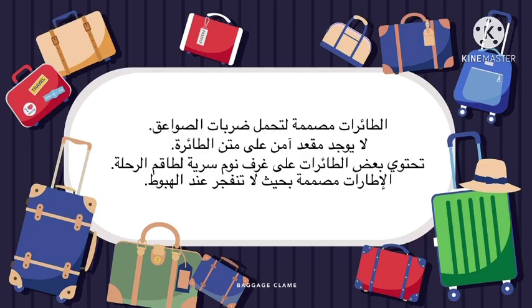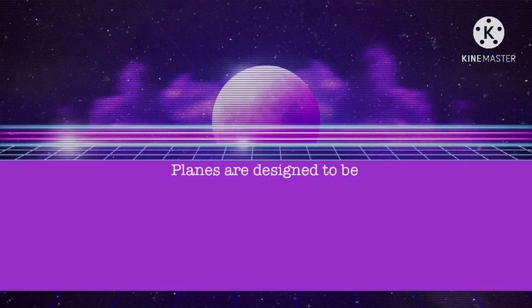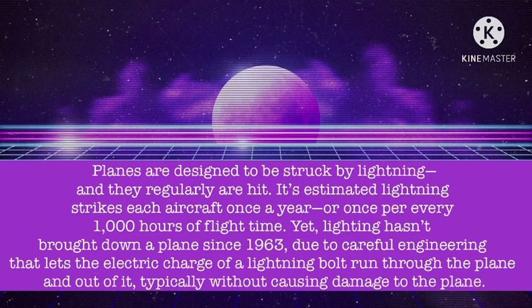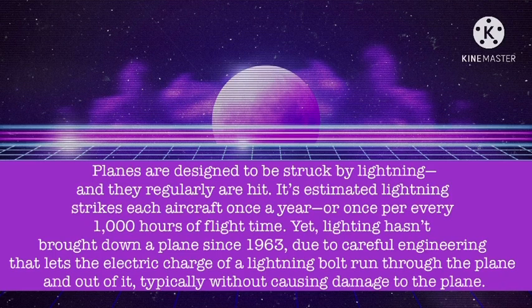The planes are designed to be struck by lightning, and they regularly are hit. It's estimated lightning strikes each aircraft once a year, or once per every thousand hours of flight time. Yet lightning hasn't brought down a plane since 1963, due to careful engineering that lets the electric charge of a lightning bolt run through the plane and out of it, typically without causing damage.